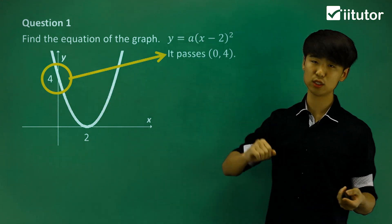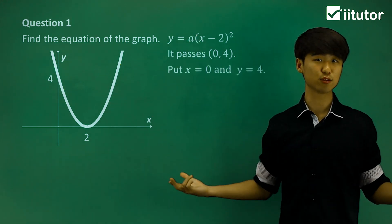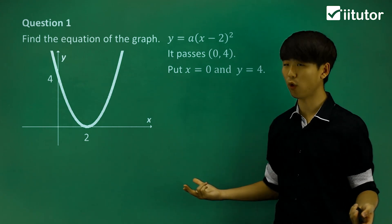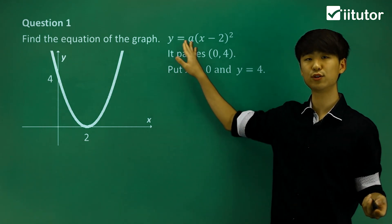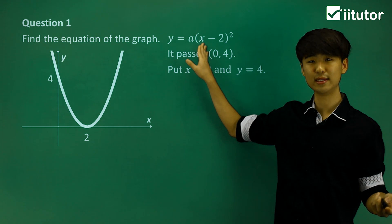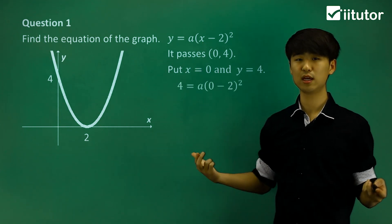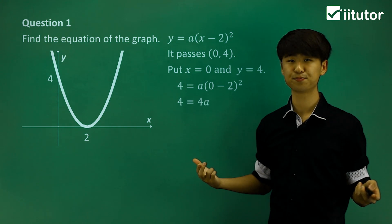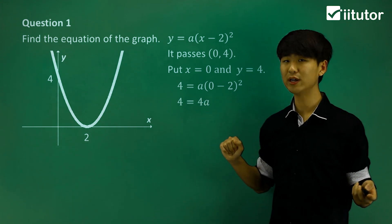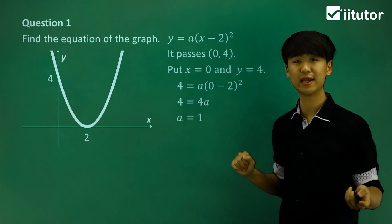So if we substitute into this equation where x is equal to 0 and y is equal to 4, I want you to put that into the y's here and the x is in there. So let's do this, then we'll find a. So divide both sides by 4 and simplify, and we can get a is equal to 1.